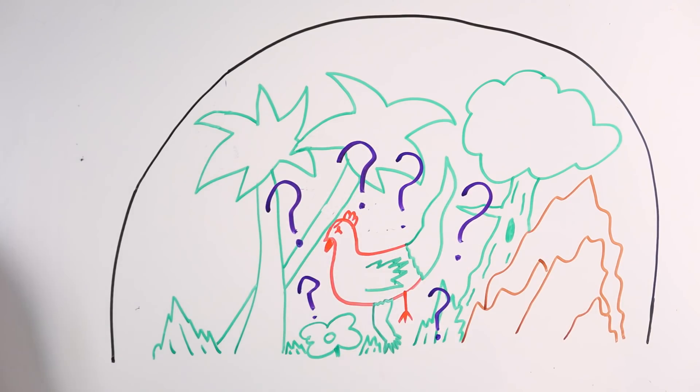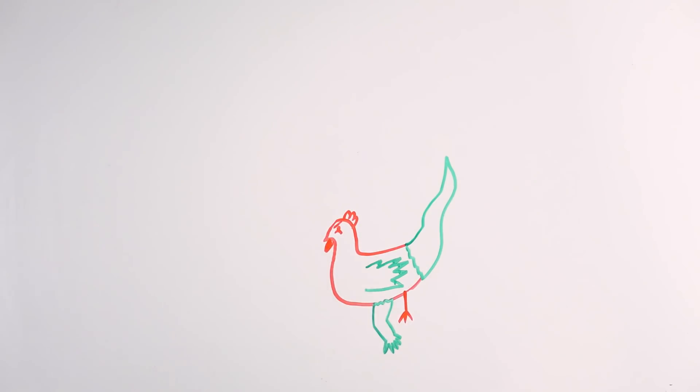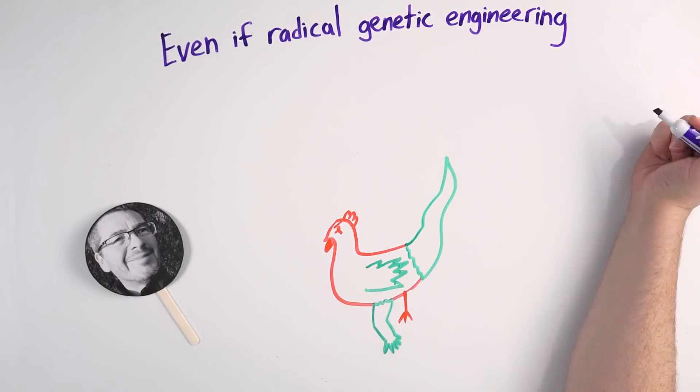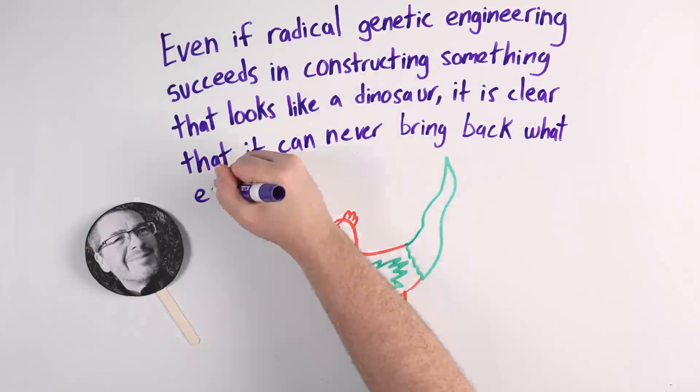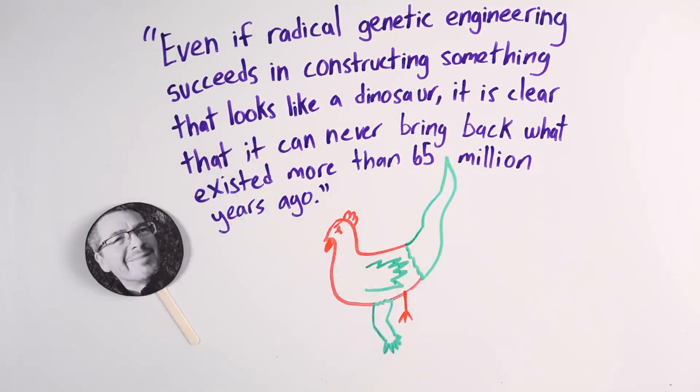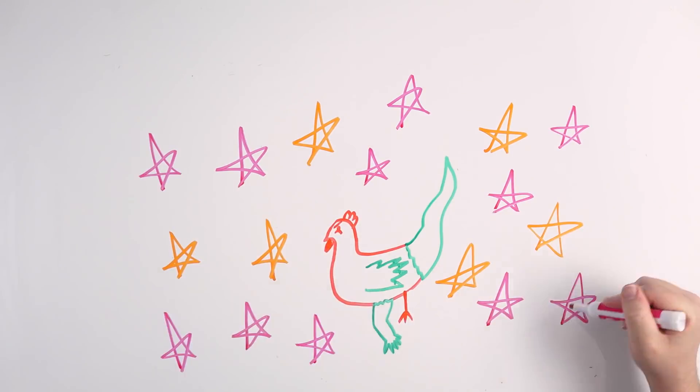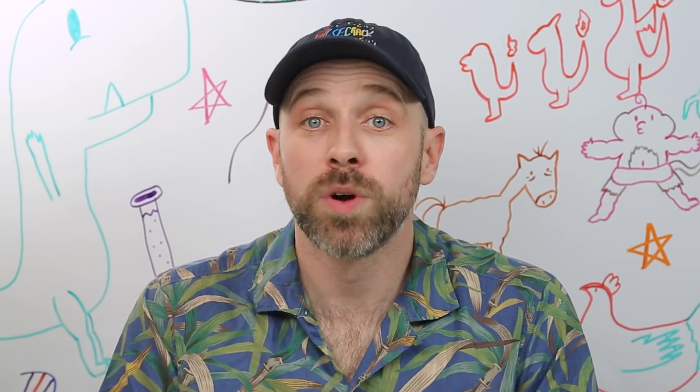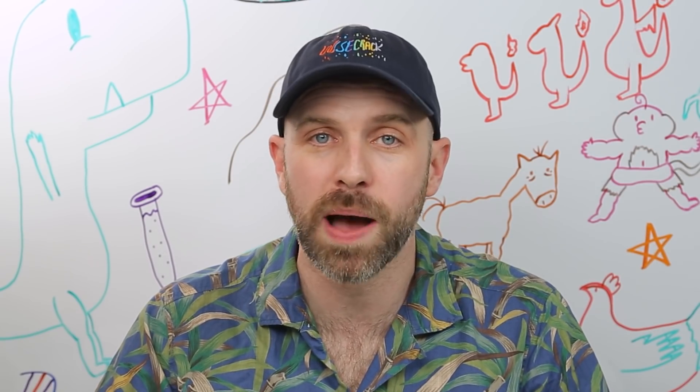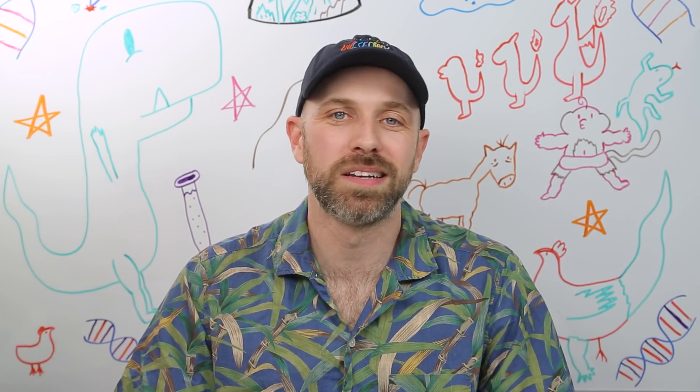We didn't get to use any prehistoric genetic material from Tom or anybody else. As writer Chris Edwards argues, even if radical genetic engineering succeeds in constructing something that looks like a dinosaur, it is clear that it can never bring back what existed more than 65 million years ago. So while the dream of Jurassic Park is impossible, it would still be pretty damn cool to have this modern version of what we think a dinosaur would have looked like. And if that's not good enough for you, you're probably one of those insufferable types that won't eat Chipotle because it's not authentic. And if that's the case, you'll get what you deserve, which is of course a massive chickensaurus eating you and then shitting you out in front of your old school. That's what we'll train them to do because why not?